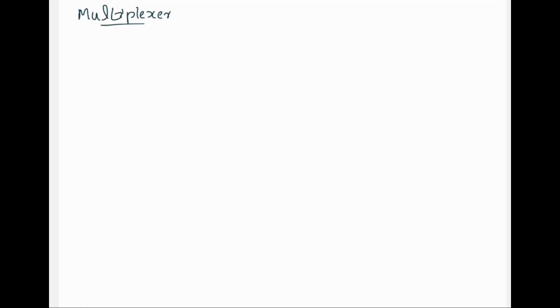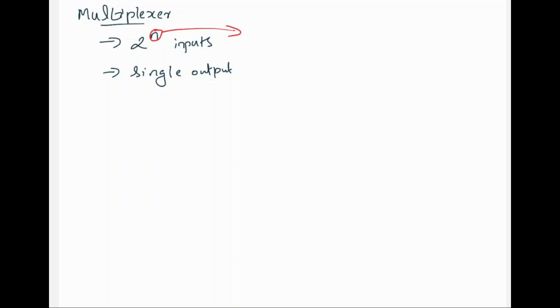In this session, we will see about multiplexer. A multiplexer is a device having 2 raised to n inputs and only a single output. This n stands for select lines, so the number of inputs depends upon the number of select lines.